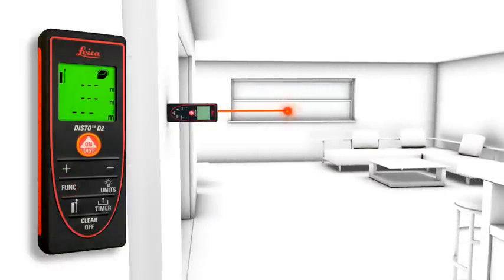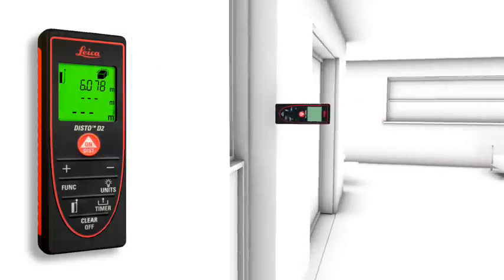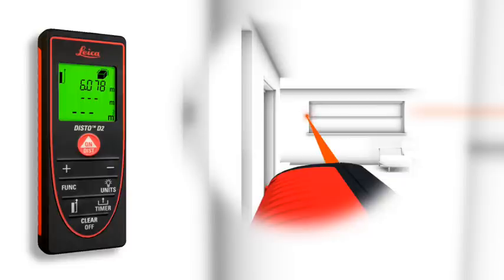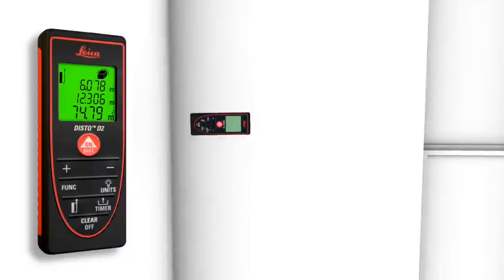Two to three simple measurements are enough and the Leica Disto D2 calculates fast and precise wall and ceiling areas as well as volumes. Single and final results can be displayed at the same time due to the three-line display.